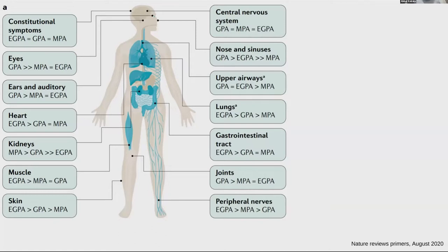All of them have different predilection for different organ systems, and the classification is very fluid and can change. For example, you can see from this cartoon that kidneys are much more commonly involved in MPA than GPA, and more than EGPA.